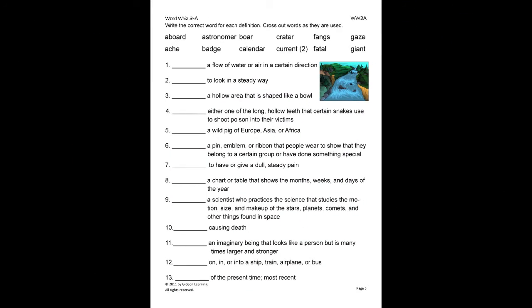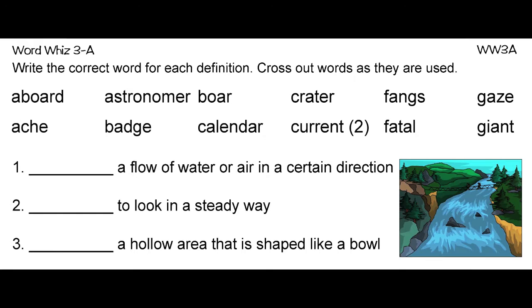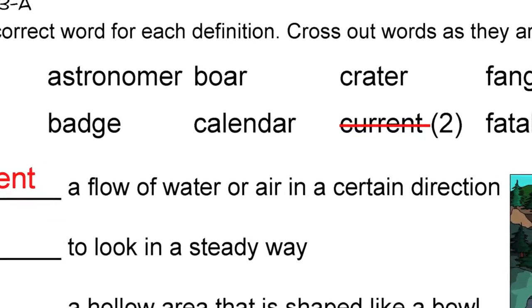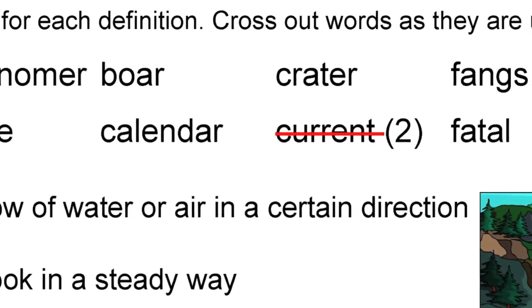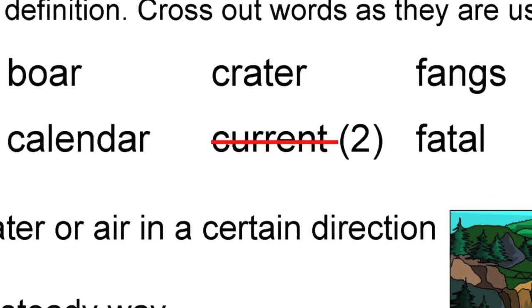On this exercise, the student will write the correct word for each definition. Cross out words as they are used. Let's do number one for example. A flow of water or air in a certain direction. Since we know this is the correct definition for current, we will cross out current and neatly write it on the line. Notice the two in parentheses next to the word current. This indicates this word will be used twice.